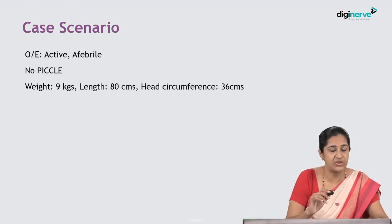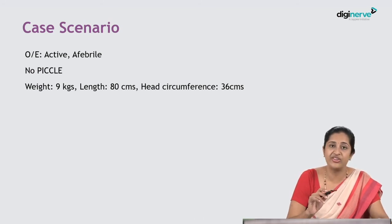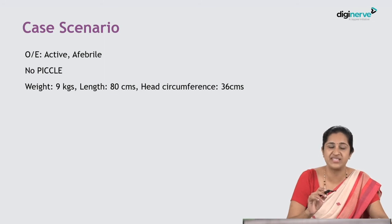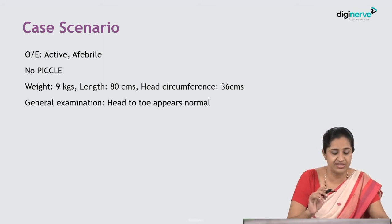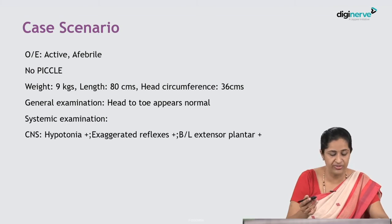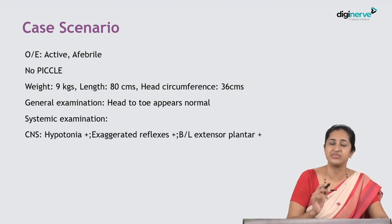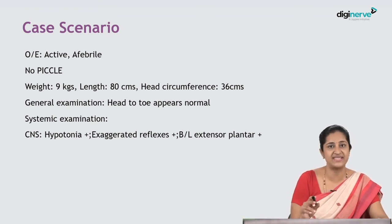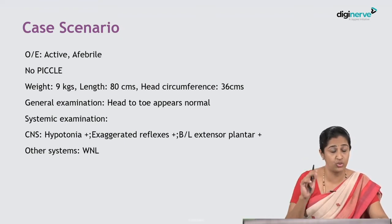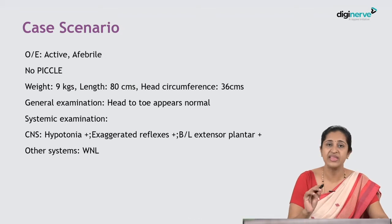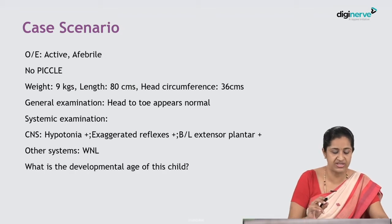On examination, the child was active and afebrile. General examination was normal. Weight of nine kgs, length of 80 centimetres, head circumference of 36 centimetres. Systemic examination of the central nervous system showed that the child was hypertonic. There were exaggerated reflexes and extensor plantar at two years of age. Other systems were within normal limits.